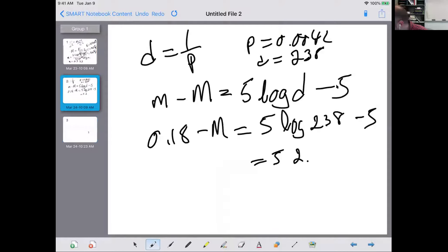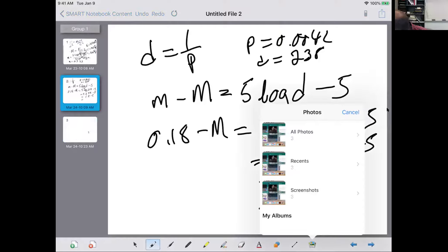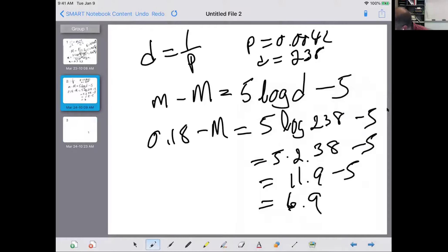If you take the log base 10 of that, you get a number that's like 2.38. Which is weird because 238. That's cool. 5 times 2.38 minus 5. Multiply 2.38 times 5, you get 11.9. 11.9 minus 5 is 6.9.